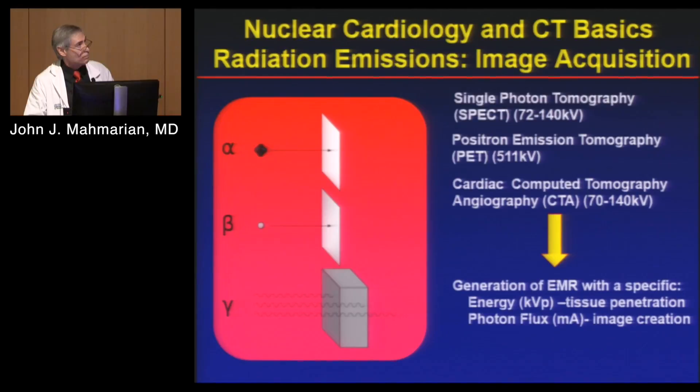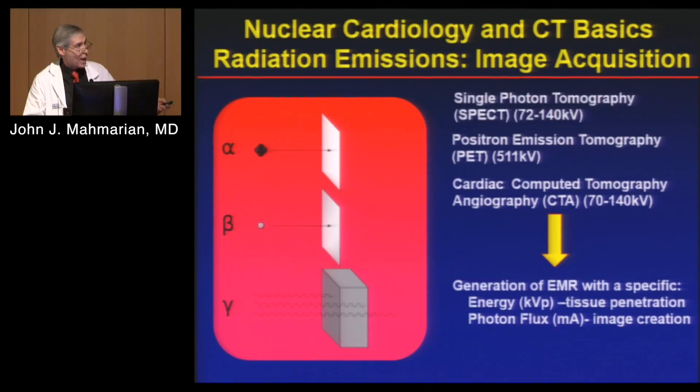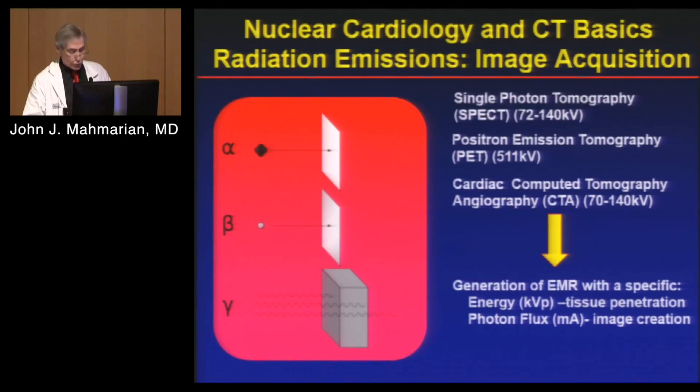Gamma rays are the only things that can get through bodies to enable imaging. In both CT and nuclear techniques, we generate electromagnetic radiation — high energy gamma rays. We use a certain kV depending on the radio tracer and how we set our CT scanner, and we have a certain photon flux — how many photons are coming out to image the patient.